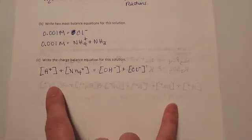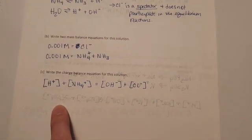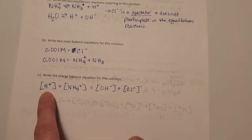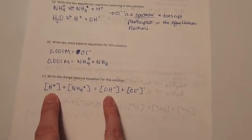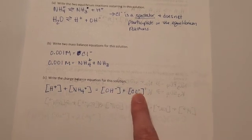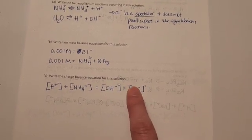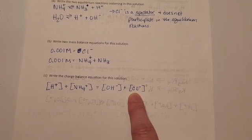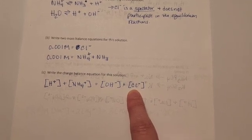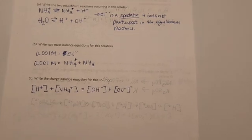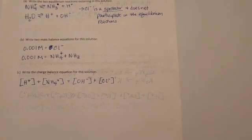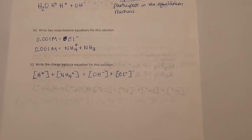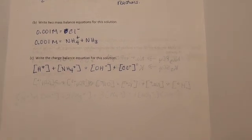And then the third part is the charge balance for this solution. And the important thing to remember here is that you have to put in your H plus and your OH minus. And your chloride does get counted as an anion for this question because it does have a charge. It doesn't participate in an equilibrium reactant, but it does have a charge and therefore participates in the charge balance equation for the solution.